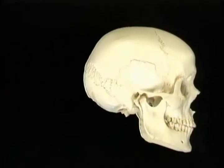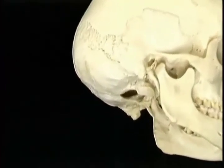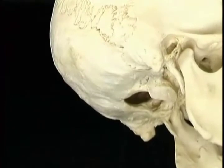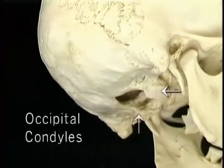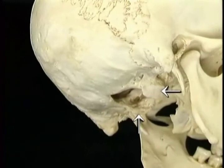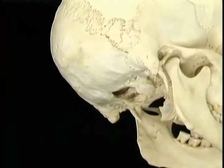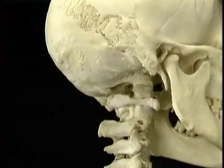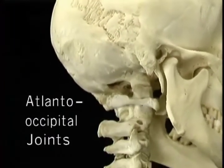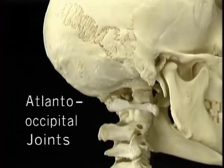Let's look at some more details in a skull that hasn't been coloured. On each side of the anterior half of the foramen magnum are the two occipital condyles. The occipital condyles are the joint surfaces which articulate with the atlas vertebra to form the atlanto-occipital joints.